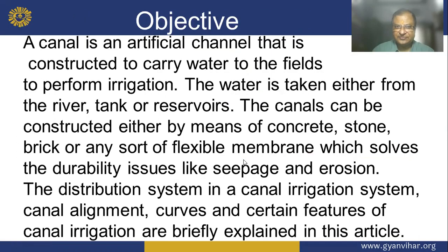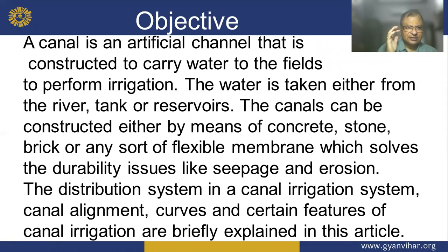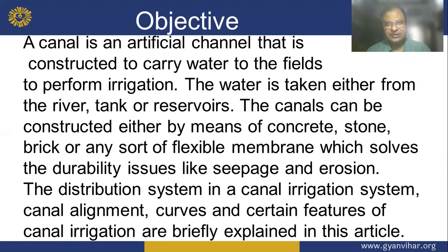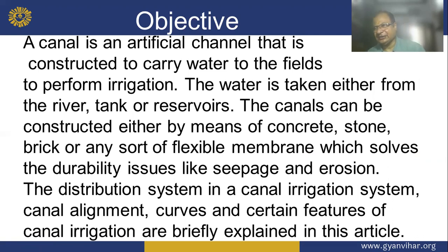Today we are starting the topic. The objective is that a canal is an artificial channel that is constructed to carry water to the field for irrigation. The water is taken either from the river bank or a reservoir.